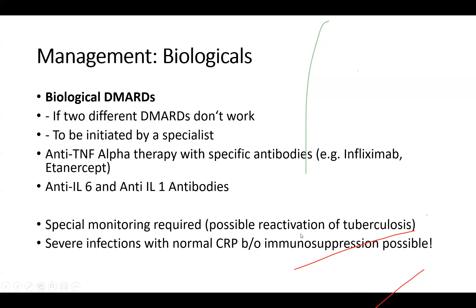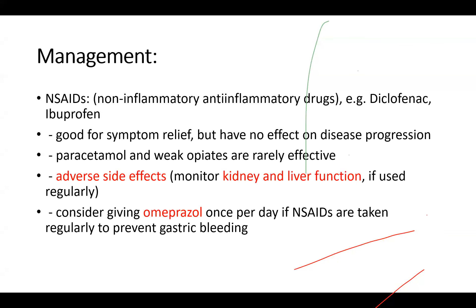There are many new specific antibodies in the pipeline — they are highly, highly effective but may have side effects, including possible reactivation of tuberculosis. They might mask severe infection with a normal CRP, because we are blocking the immune system. So a patient might have a severe infection but the CRP is normal, meaning you don't really realize what's going on. They are very efficient and do their job, but must be treated with great caution.